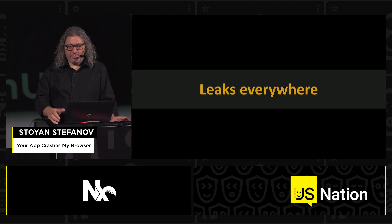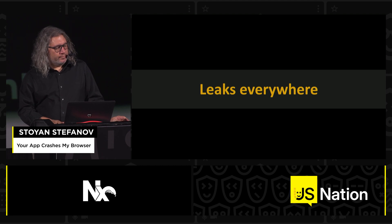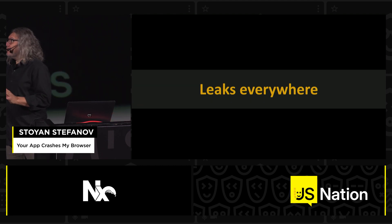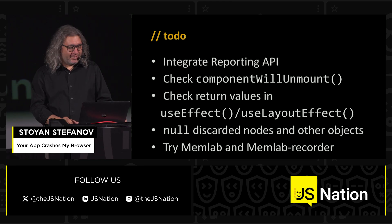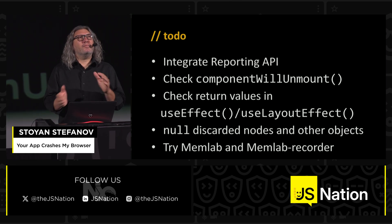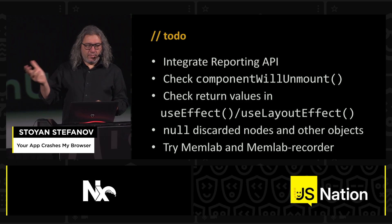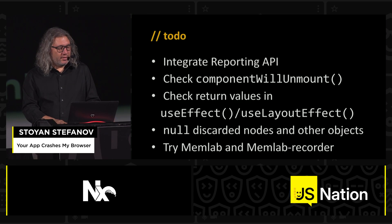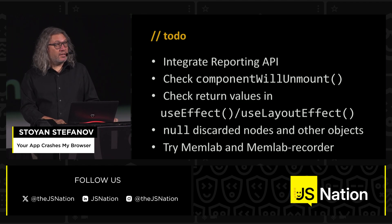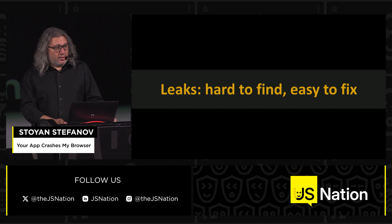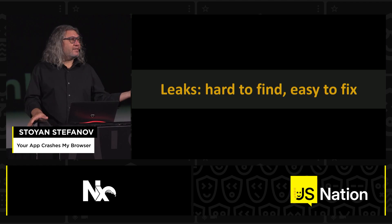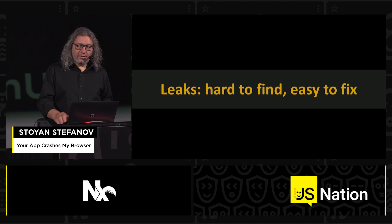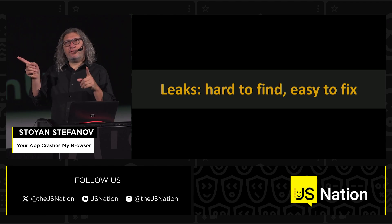To sum up: leaks are everywhere, and when you go home tonight, here's what to do. Try the Reporting API, then check whatever your framework of choice allows you. Use null everywhere. Try MemLab and the MemLab scenario recorder and see how that works for you. Leaks are hard to find but usually very easy to fix — just assign null to things, clean up after yourself, and try to use the tools we have. Find your first leak today, and this will make your users, if not happy, at least a little bit less frustrated.